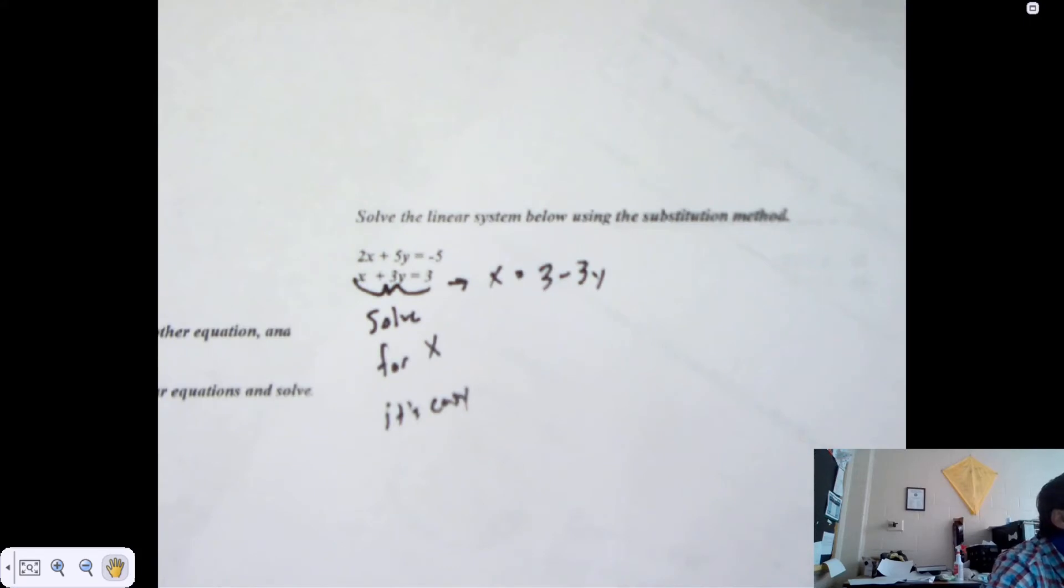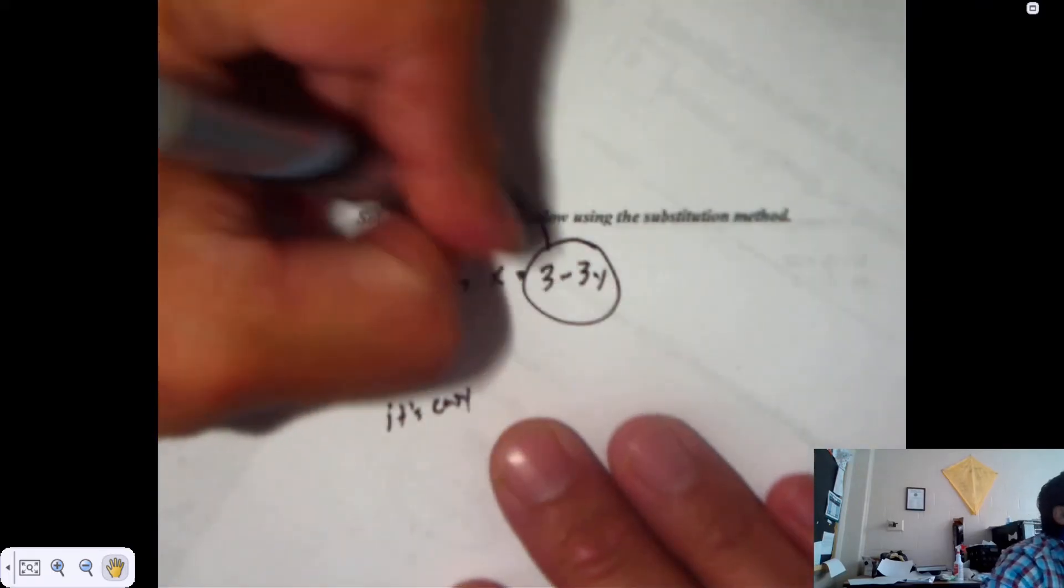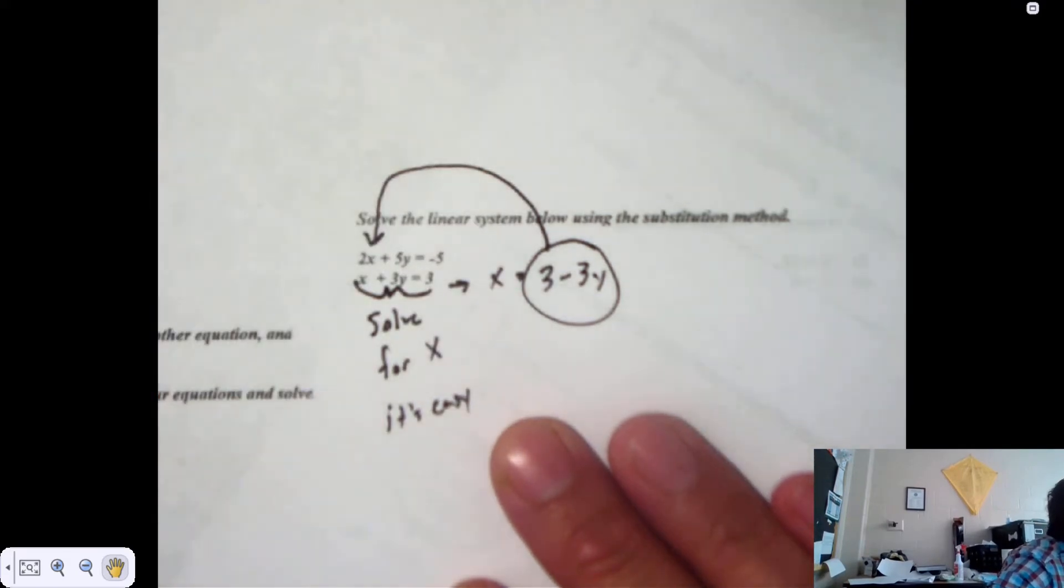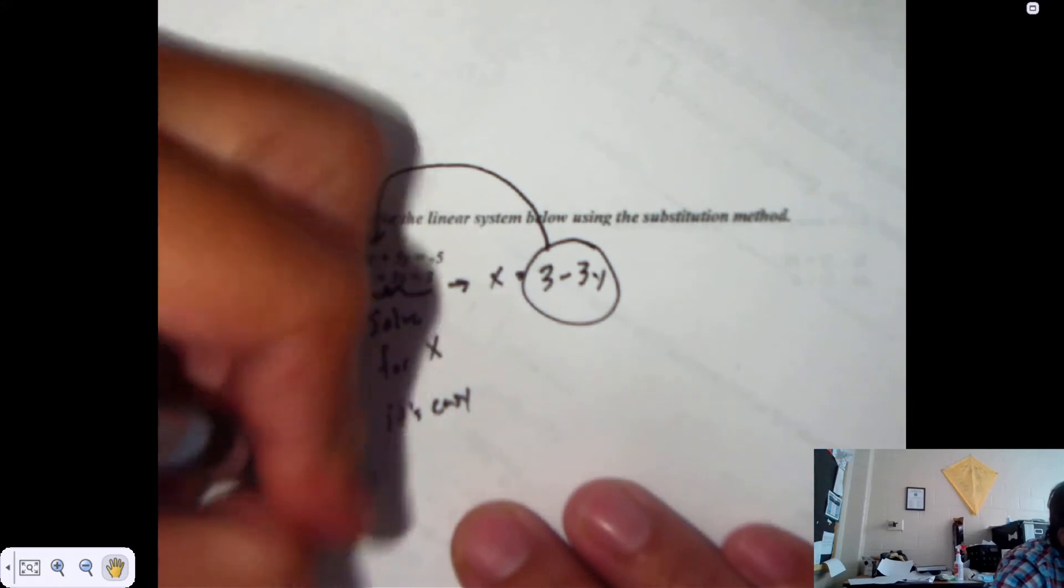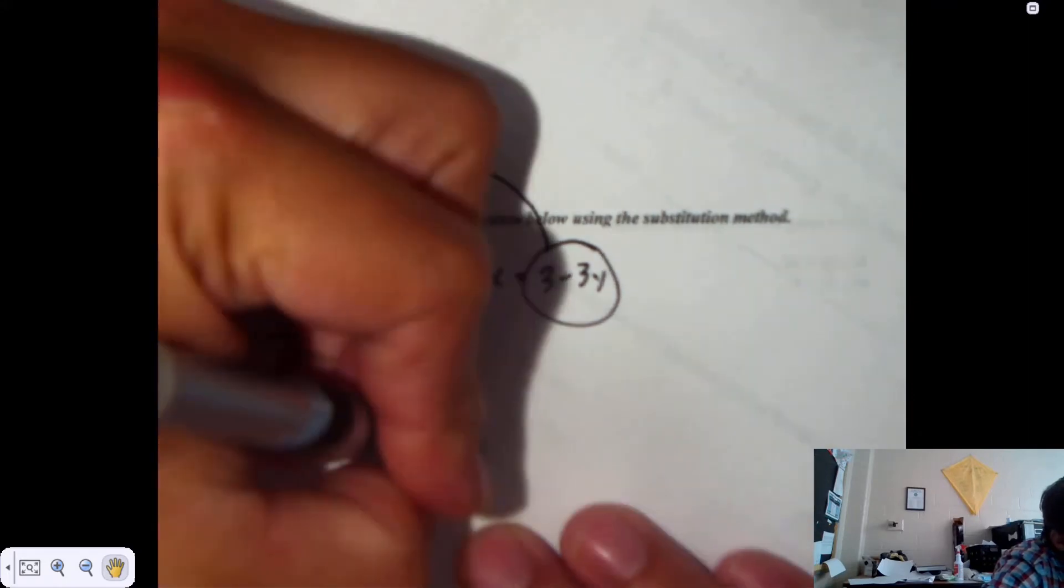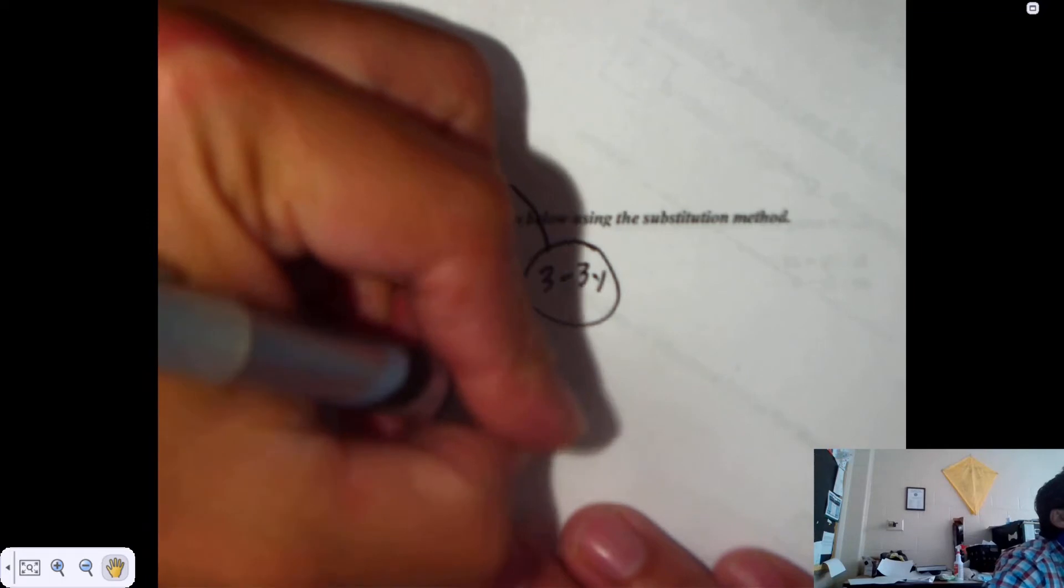So you know what X is? Plug it into the top. Plug it into the top equation. Where? For X. For X. Don't be the kid that doesn't get this. This is pure common sense. If that was X, there's an X. Twice a 3 minus 3Y plus 5Y is negative 5.